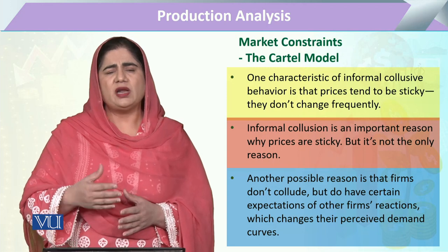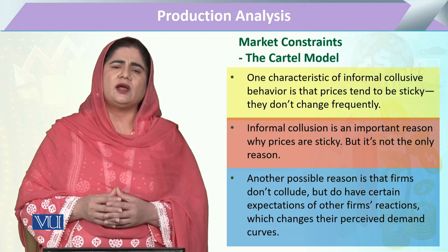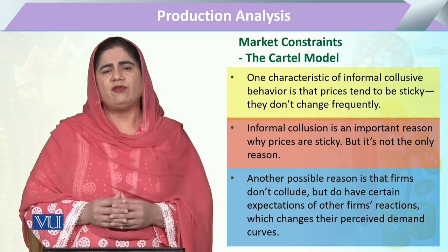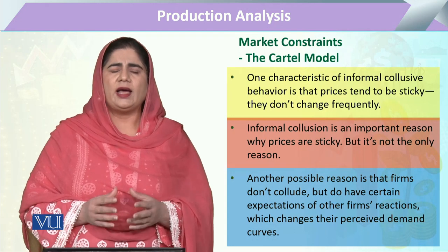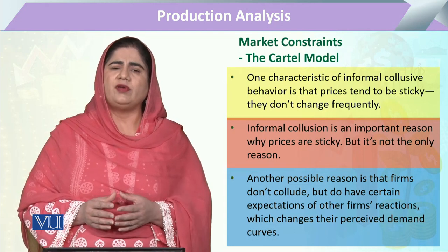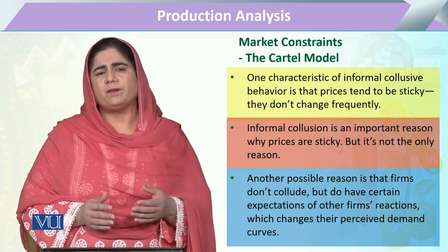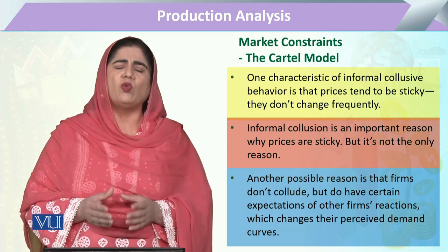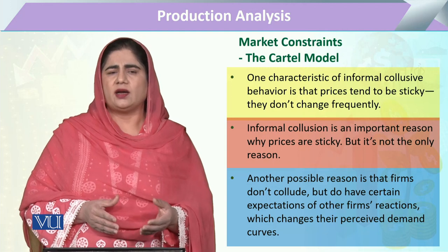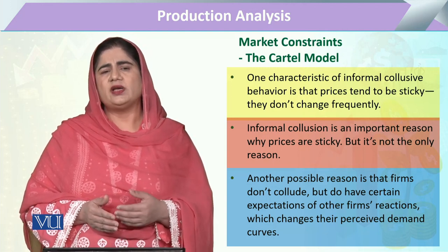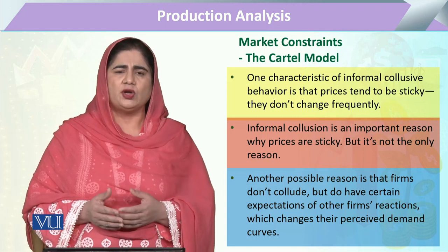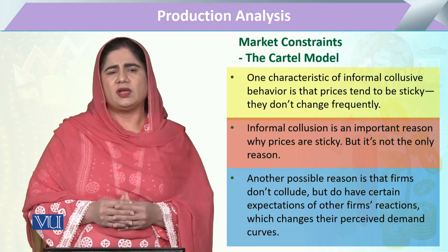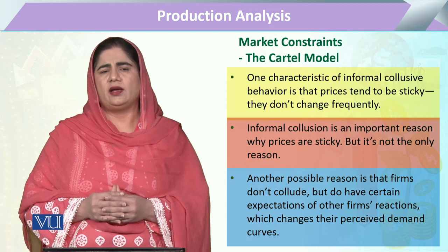Informal collusion means that the firms understand that there are other firms producing a similar nature of output, and in the market they mostly have similar or almost the same homogeneous output. So if any firm produces any quantity, it will be affected by the other firms, and it can also affect those other interdependent firms. There is mild competition, but mostly firms accept that other firms exist, so they take decisions as a response to other firms. This informal collusion is basically a model based on expectation.